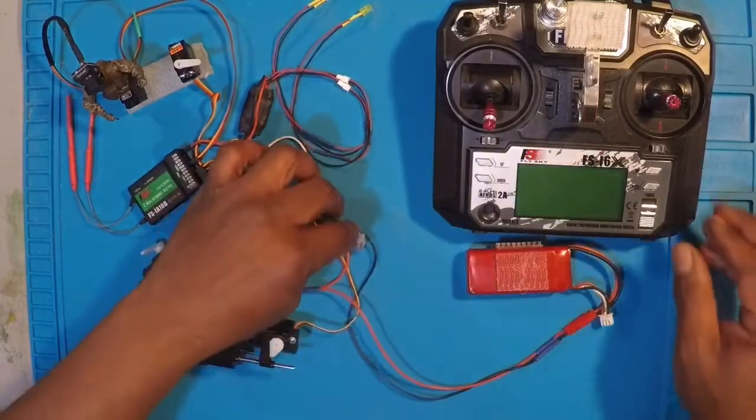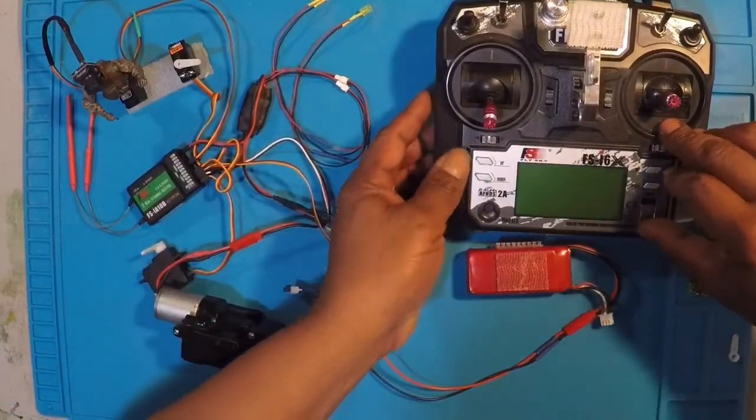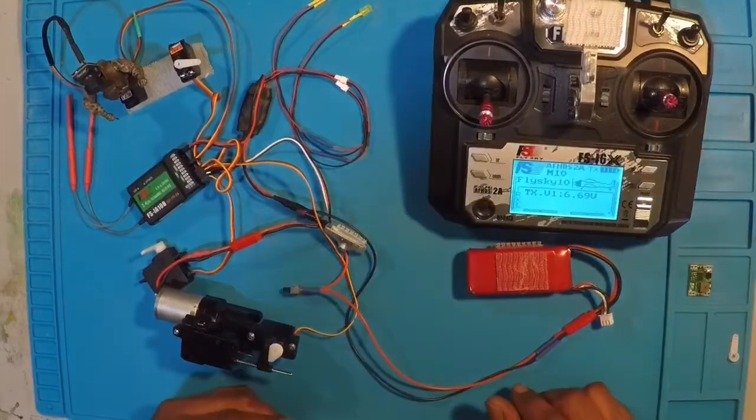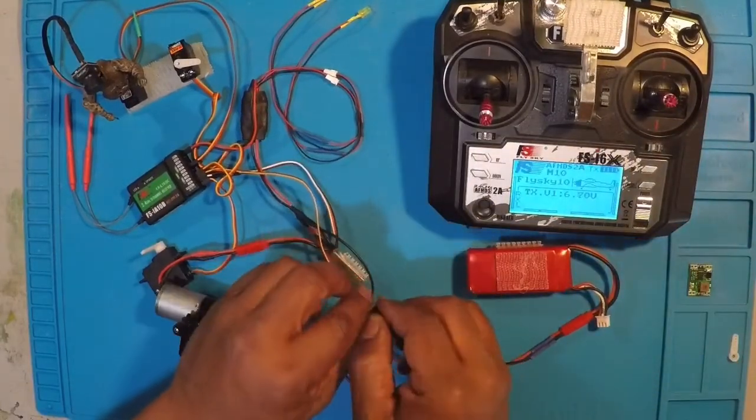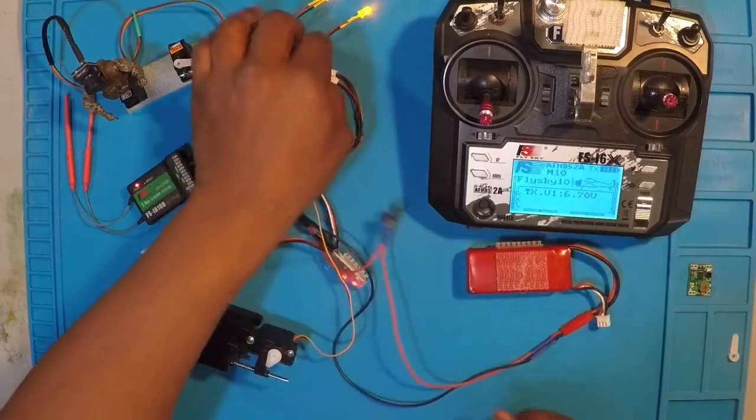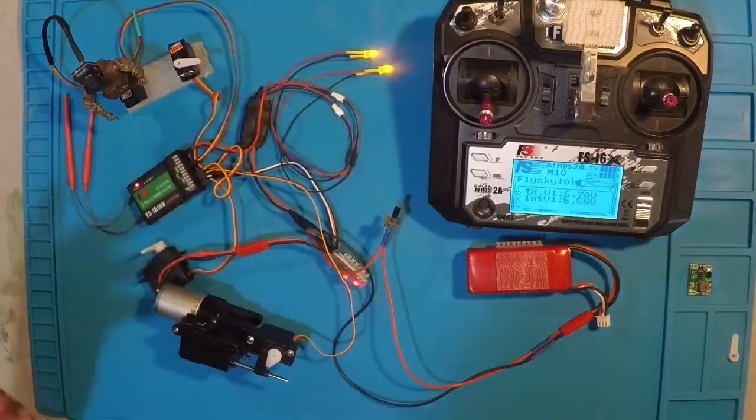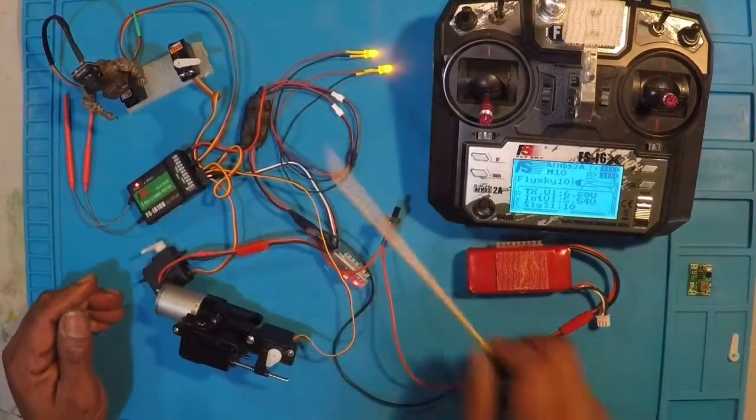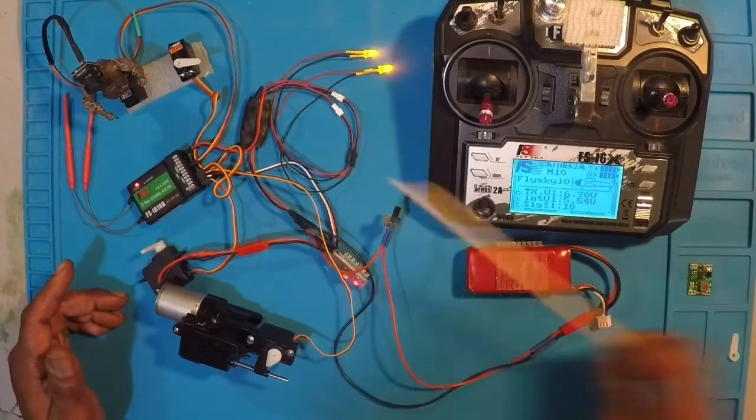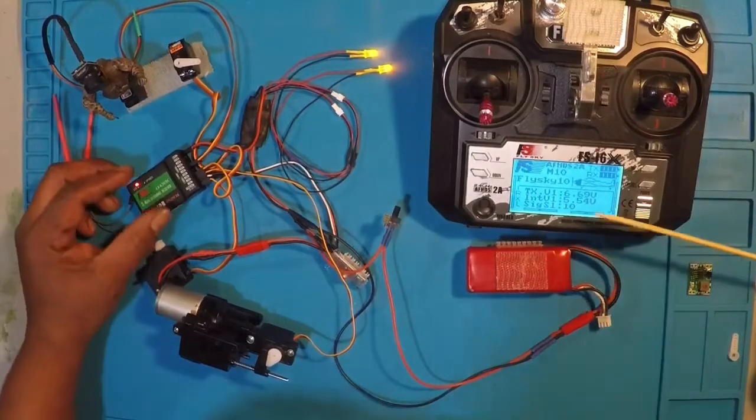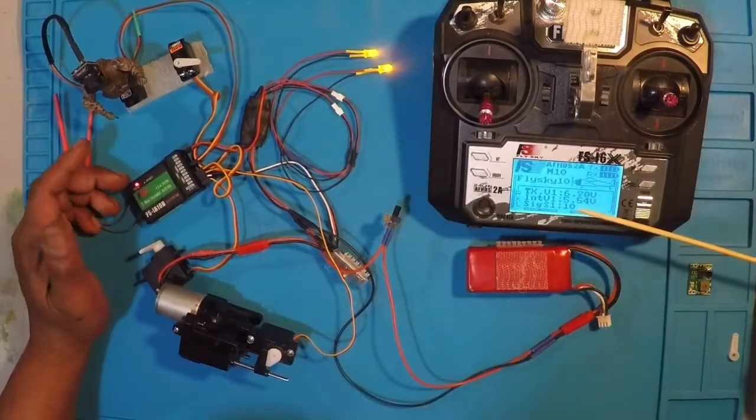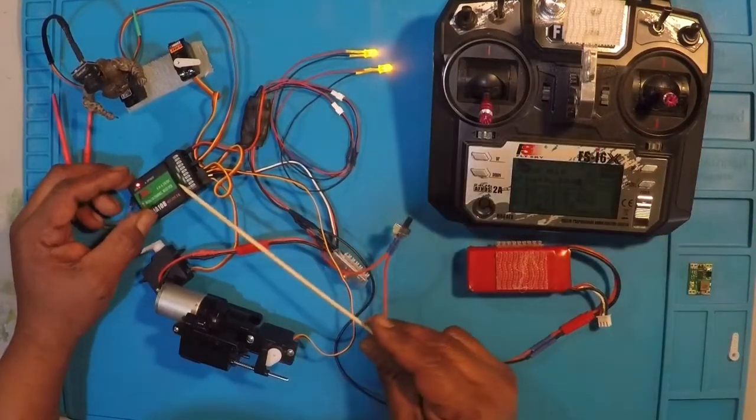And then due to the fact that we've added an on-off button, we'll go ahead and power this on. Okay, so you can see we've got our power indicator lights here on. We can see here on our transmitter, it's telling us that we're getting 5.54 volts from the receiver.